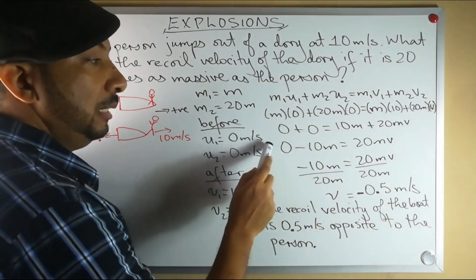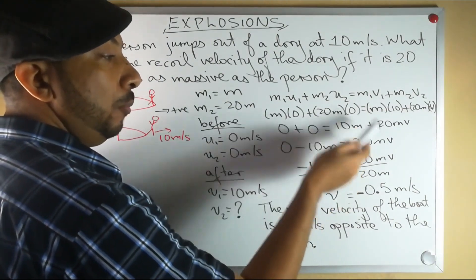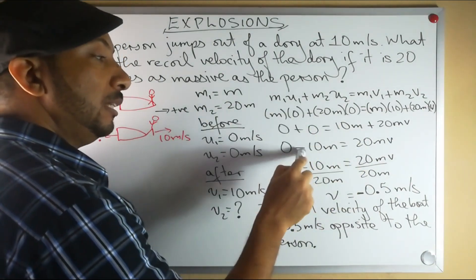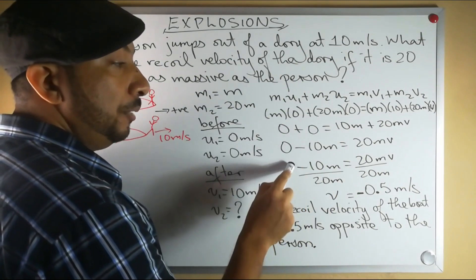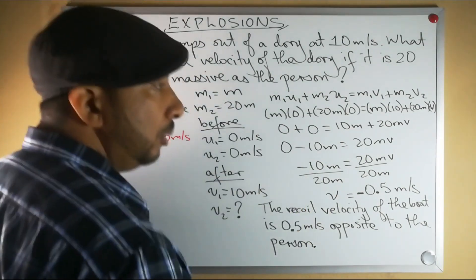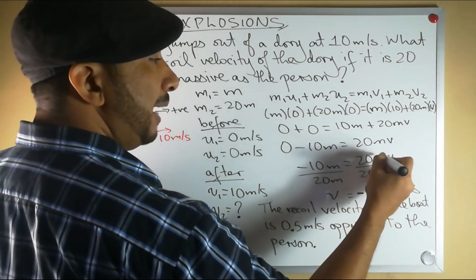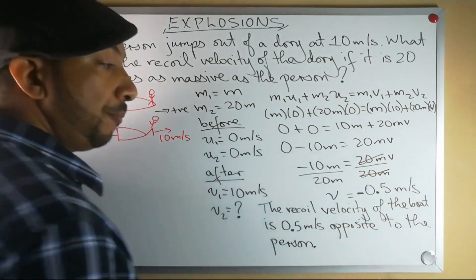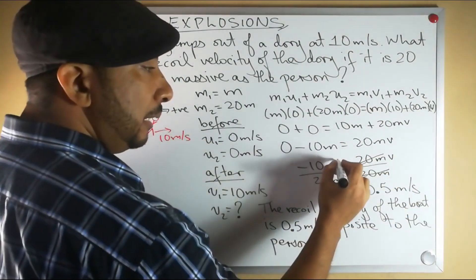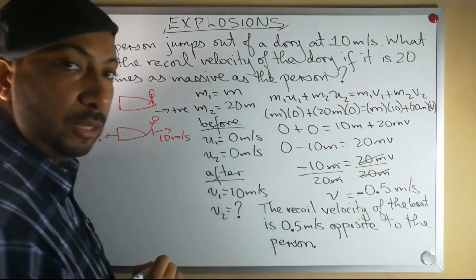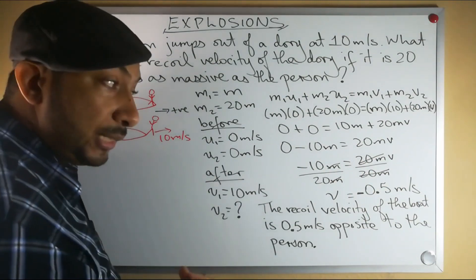0 plus 0 is of course 0. When we transpose this 10m to the other side, we will subtract it from 0, so it gives us a negative 10m here. Now to get v, we then divide both sides by 20m.